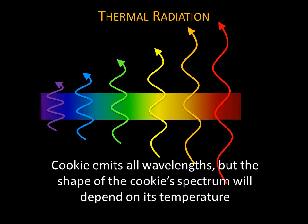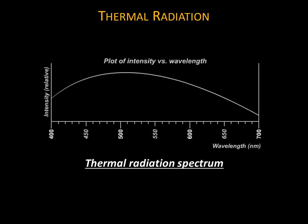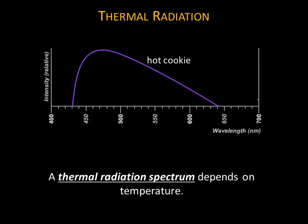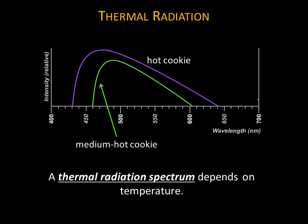Our cookie emits photons with all wavelengths, but the shape of the cookie spectrum will depend on its temperature. A really hot cookie will emit a larger number of higher energy photons, so its spectrum would be peaked on the shorter wavelength side. The intensity and where the curve peaks will depend on the object's temperature. Therefore, we call this spectrum a thermal radiation spectrum. Here are thermal radiation spectra for a hot cookie, a not-quite-as-hot cookie, and a cooler cookie. The thermal radiation spectrum of any object depends on its temperature.